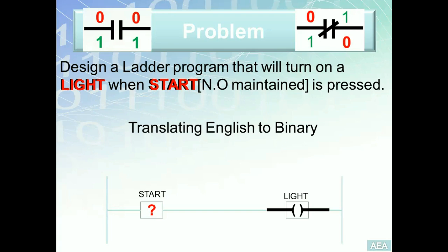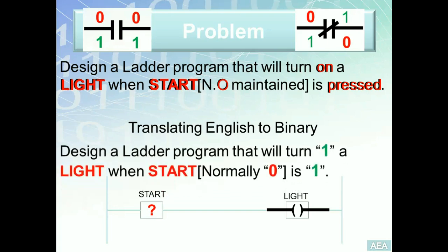Let's read it again: 'Design a ladder program that will turn on' — here the term 'on' represents the state of the output we want to achieve. 'When Start, which is a normally open maintained switch, is pressed' — 'open' is the default state for the Start input, and 'pressed' represents its changed state. So the problem translates to: turn on (which is logic 1) the light, when Start, which is normally zero, is pressed and changes to the closed state (logic 1).